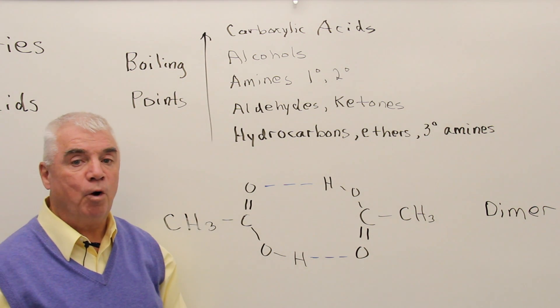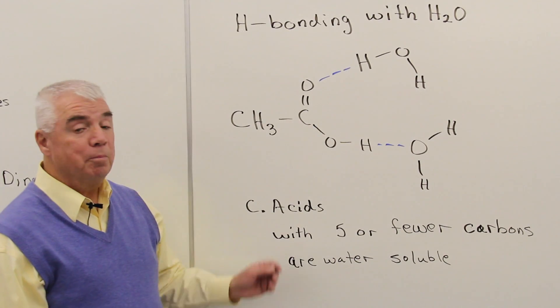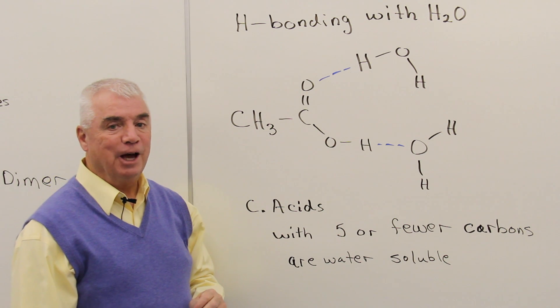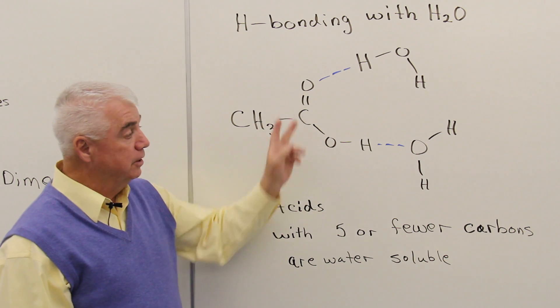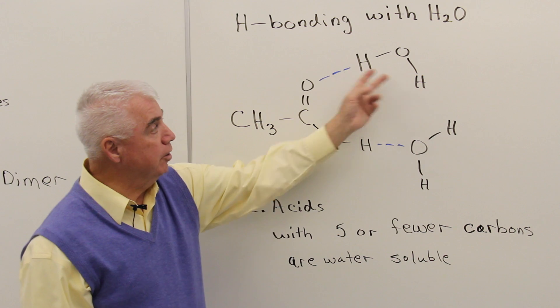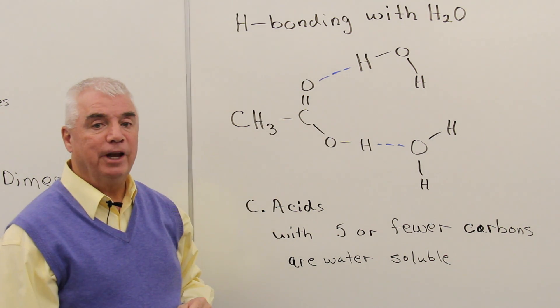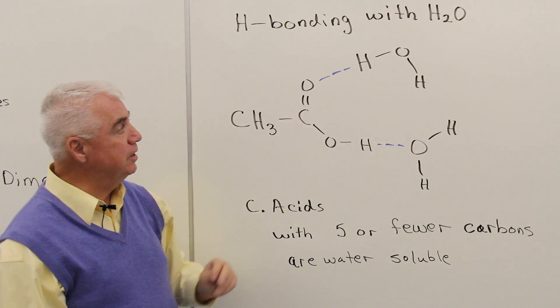Let's look at the effect of water. Carboxylic acids have two oxygens, and so they're very efficient at hydrogen bonding with water. Two different ways. Here's a water molecule with its hydrogen being attracted to the electronegative oxygen of the carboxylic acid.